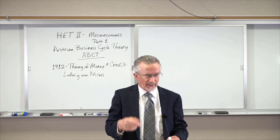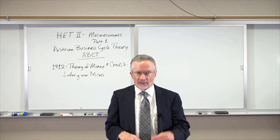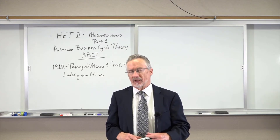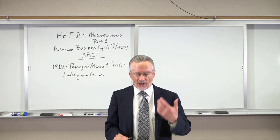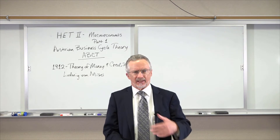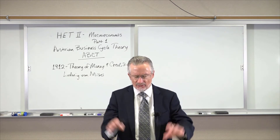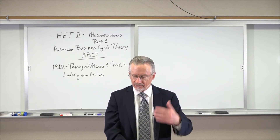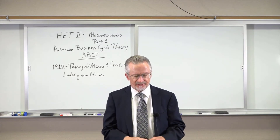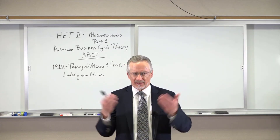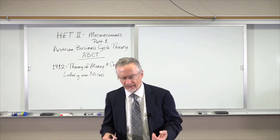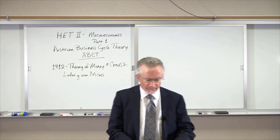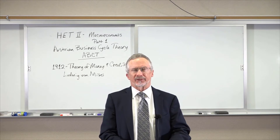In some respects it's a response to the German Historical School and the theory of chartalism, developed by Georg Knapp. Knapp argued that money was an invention of the state, created for purposes of taxation — the state bestows money on society. Knapp's argument was a response to Carl Menger, one of Mises' teachers, who had argued that money comes up spontaneously and originates in the market. Mises actually perfects the theory developed by Menger.